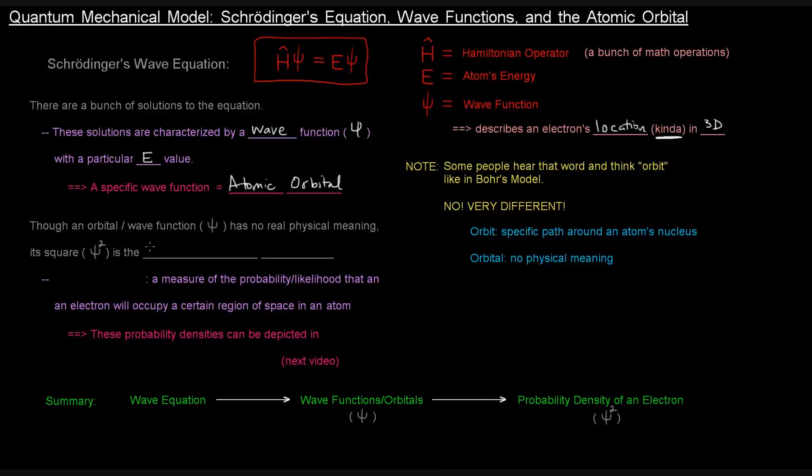So, what's that? The probability density is a measure of the probability or likelihood that an electron will occupy a certain region of space in an atom. So, it just gives us the likelihood of where an electron might be in an atom.